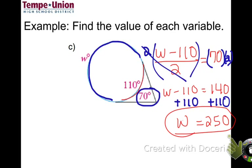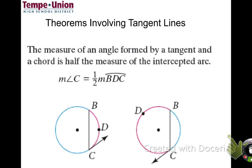There's another theorem involving tangent lines. If you have a tangent — which touches the circle in one spot — and a chord, the angle created between them equals one-half of the intercepted arc. The same applies when the chord and tangent are on the other side: the angle equals one-half of its intercepted arc.